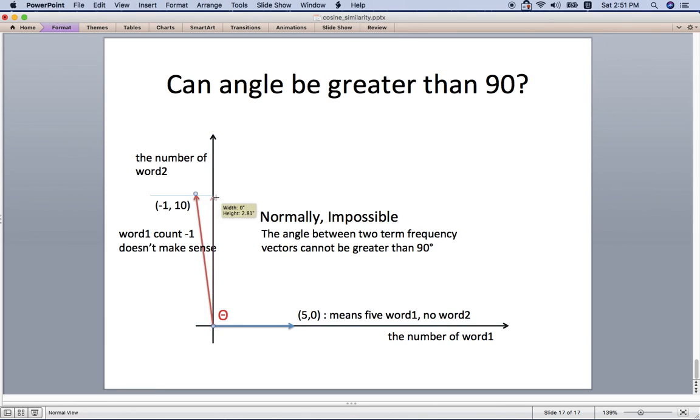That means this red line cannot be here - this red line will be something here, because the number of words should be a positive number. So cosine similarity normally guarantees it will have from the zero to one range. Okay, that's all for this tutorial and thank you very much. I will see you in the next video.